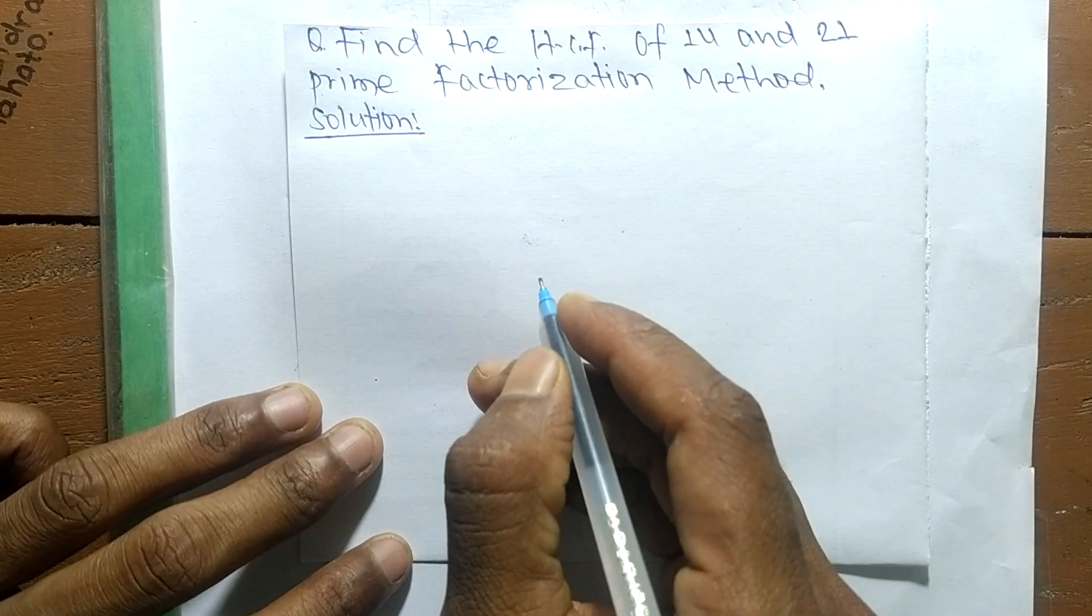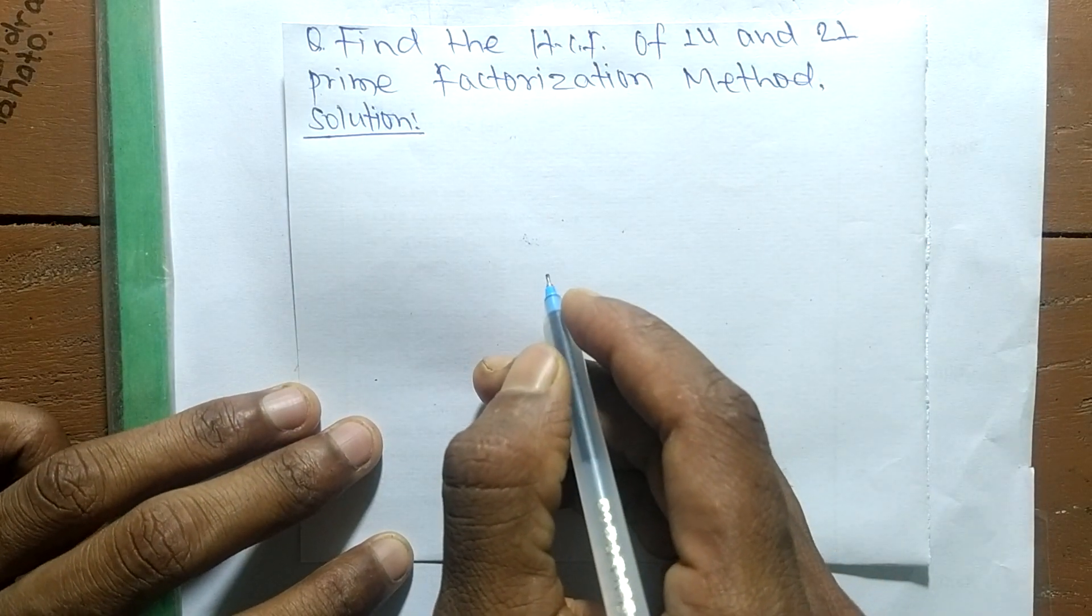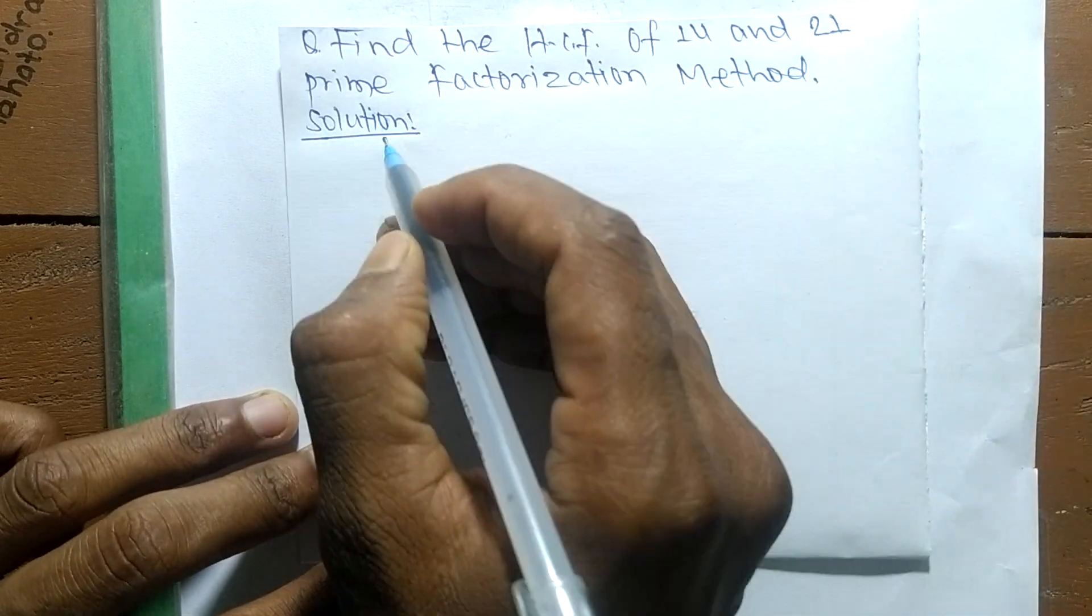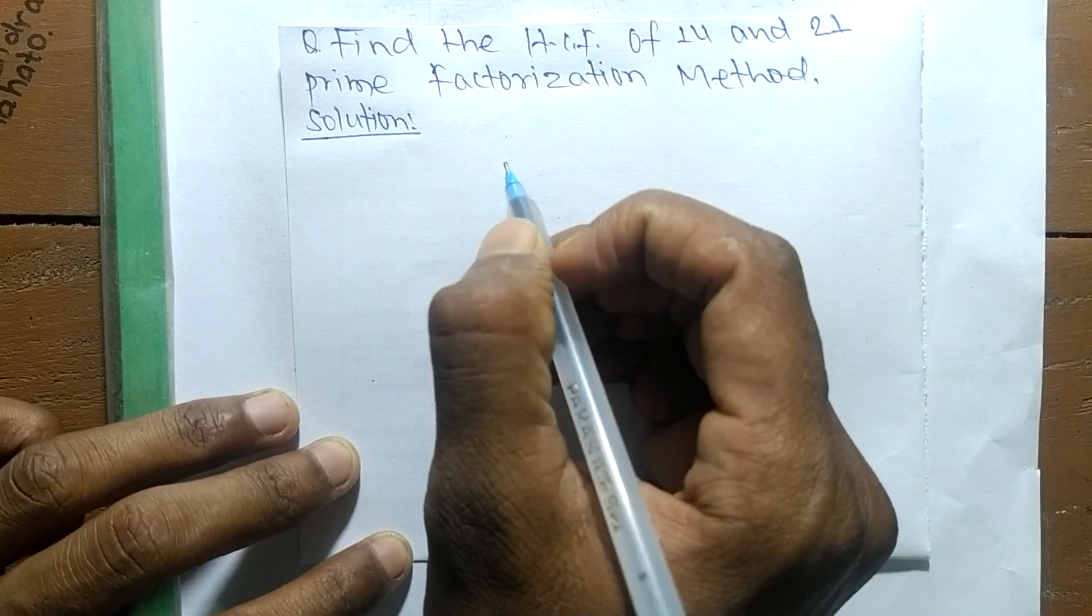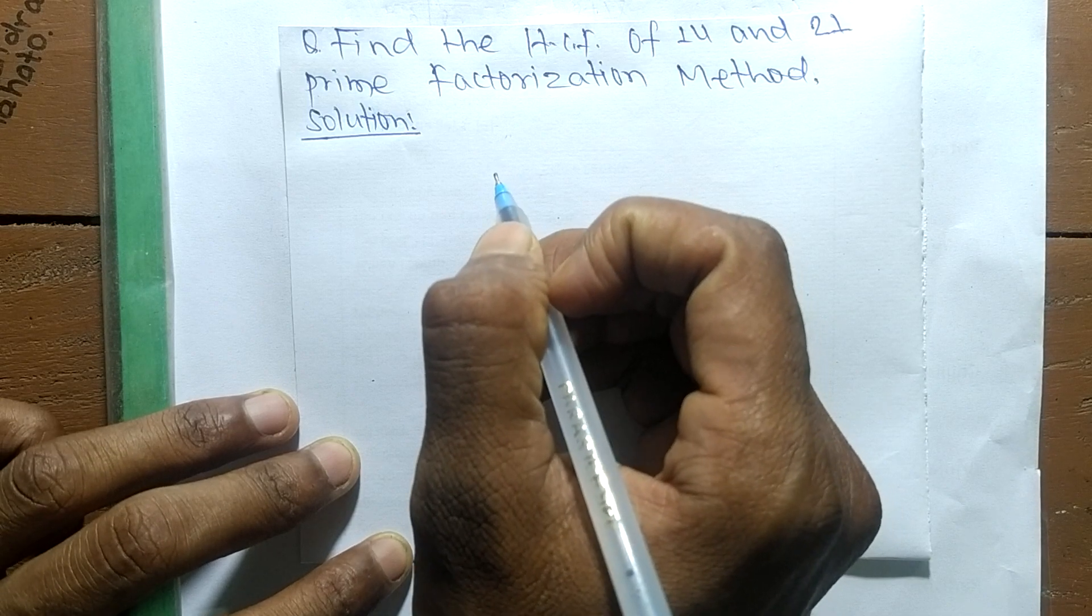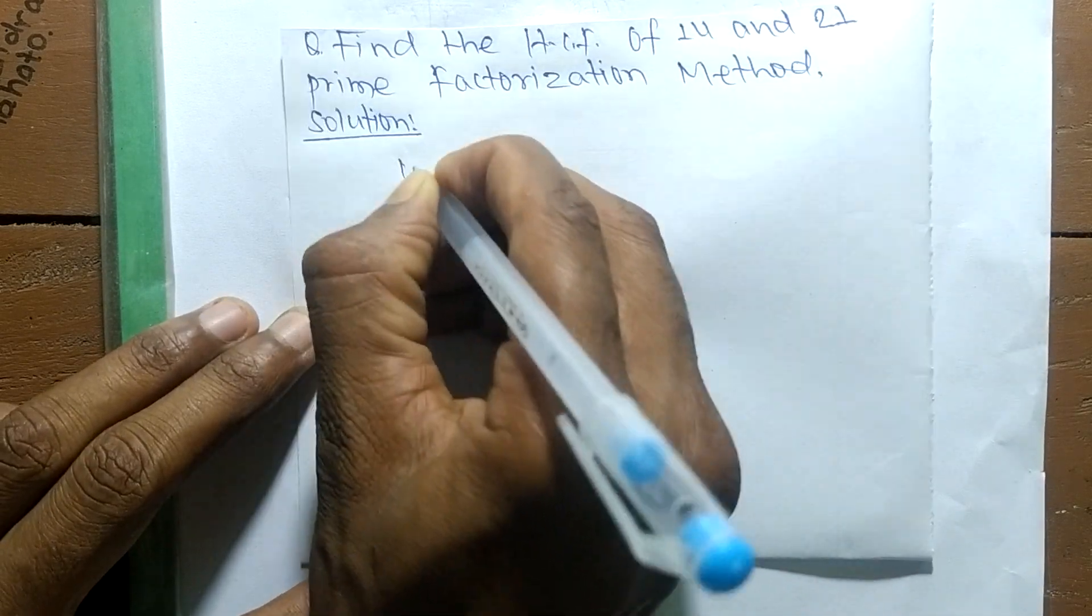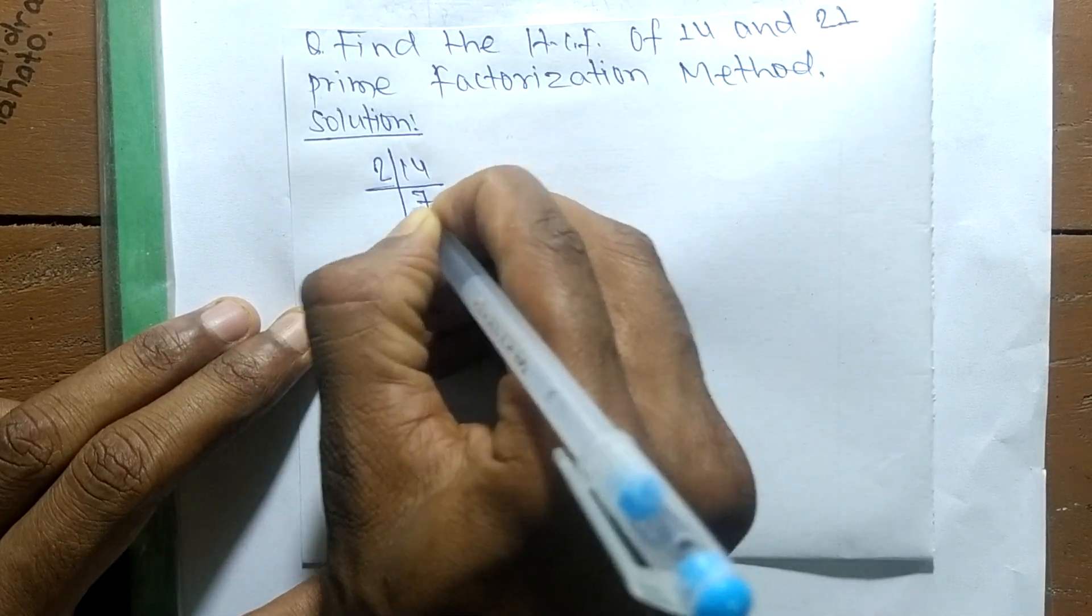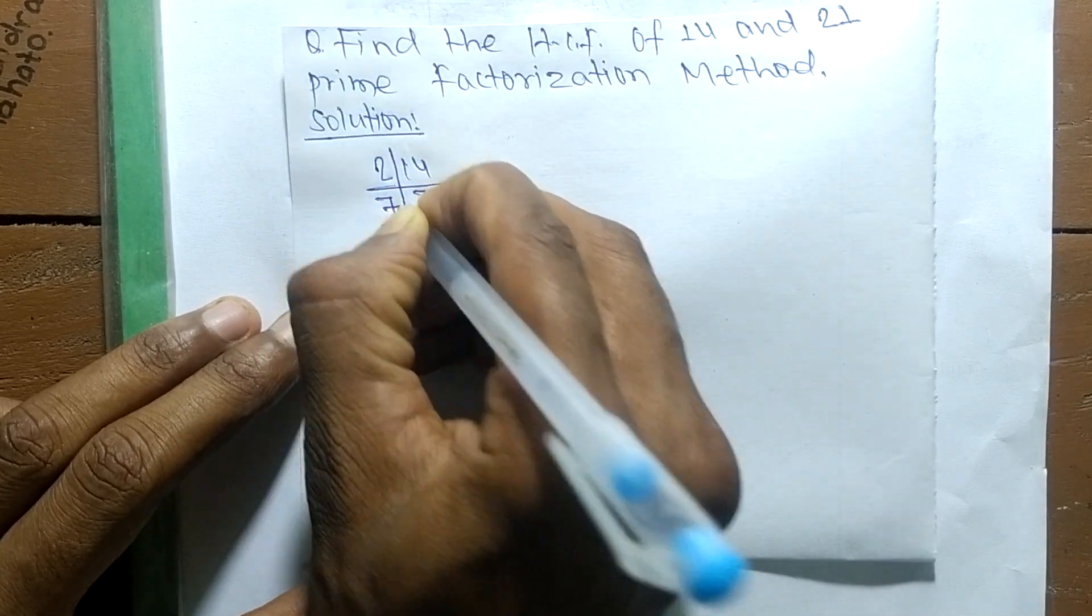So today in this video we shall learn to find the HCF of 14 and 21 by prime factorization method. So first, we find out the prime factors of 14. So it is 2 times 7 means 14, and 7 times 1 means 7.